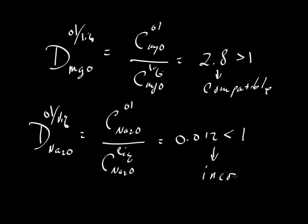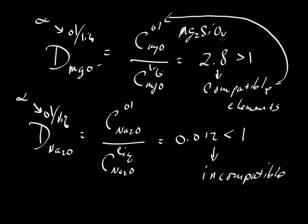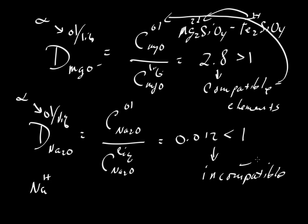For the case where the mineral forms the numerator, compatible means that the element or compound is compatible within the crystal structure. MgO is compatible — happy to be incorporated into olivine — which is no surprise given that the formula for forsterite, the dominant olivine component, is Mg2SiO4. In the forsterite–fayalite solid solution series, the other end-member is Fe2SiO4 (fayalite), where iron, a 2-plus cation, replaces magnesium. But a 1-plus cation like sodium is too large and the wrong charge, so it is incompatible and does not go into the olivine structure very well.